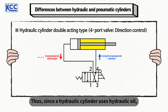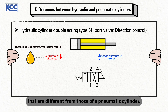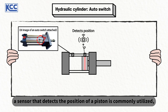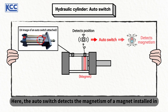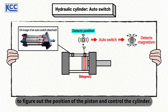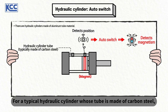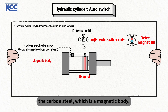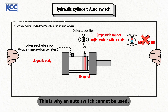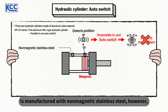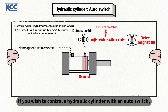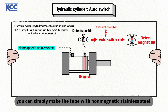Since a hydraulic cylinder uses hydraulic oil, it shows characteristics that are different from those of a pneumatic cylinder. In order to control a cylinder automatically, a sensor that detects the position of a piston is commonly utilized, and this sensor is called an auto switch. The auto switch detects the magnetism of a magnet installed in the piston inside a pneumatic or hydraulic cylinder to figure out the position of the piston and control the cylinder. For a typical hydraulic cylinder whose tube is made of carbon steel, the carbon steel — which is a magnetic body — scatters the magnetism of the magnet attached to the piston, so it is unable to deliver magnetism to the auto switch, which is why an auto switch cannot be used. If the tube of a hydraulic cylinder is manufactured with non-magnetic stainless steel, however, it is possible to use an auto switch. Therefore, if you wish to control a hydraulic cylinder with an auto switch, you can simply make the tube with non-magnetic stainless steel.